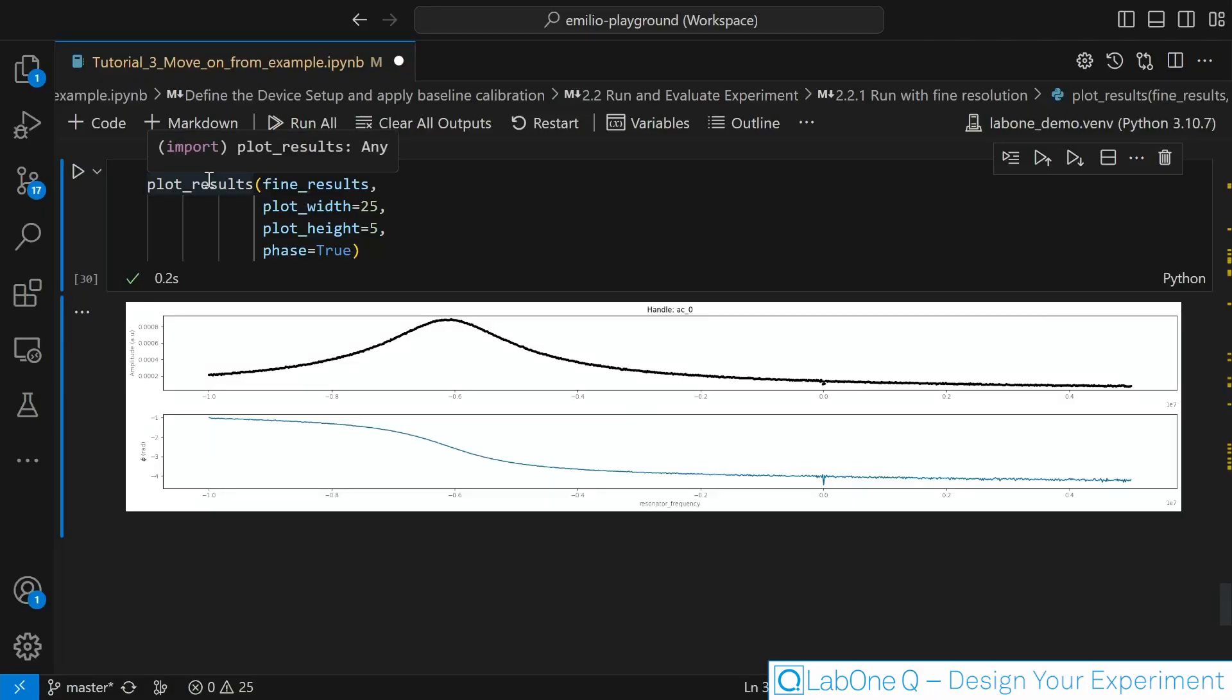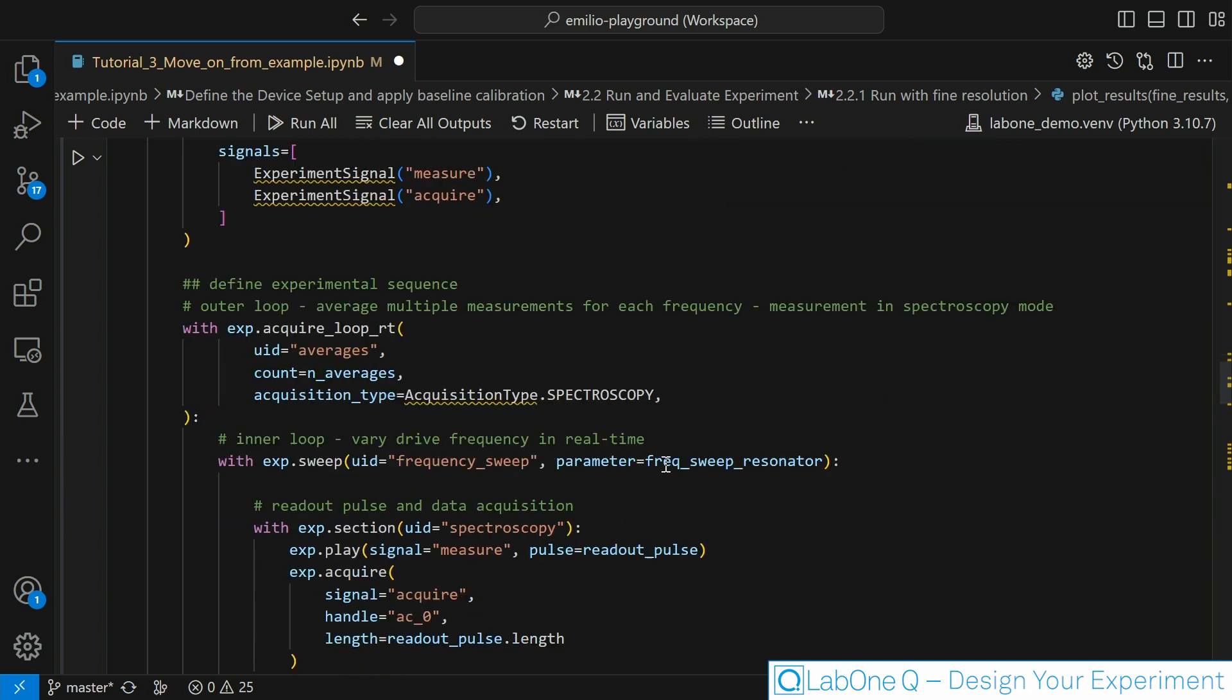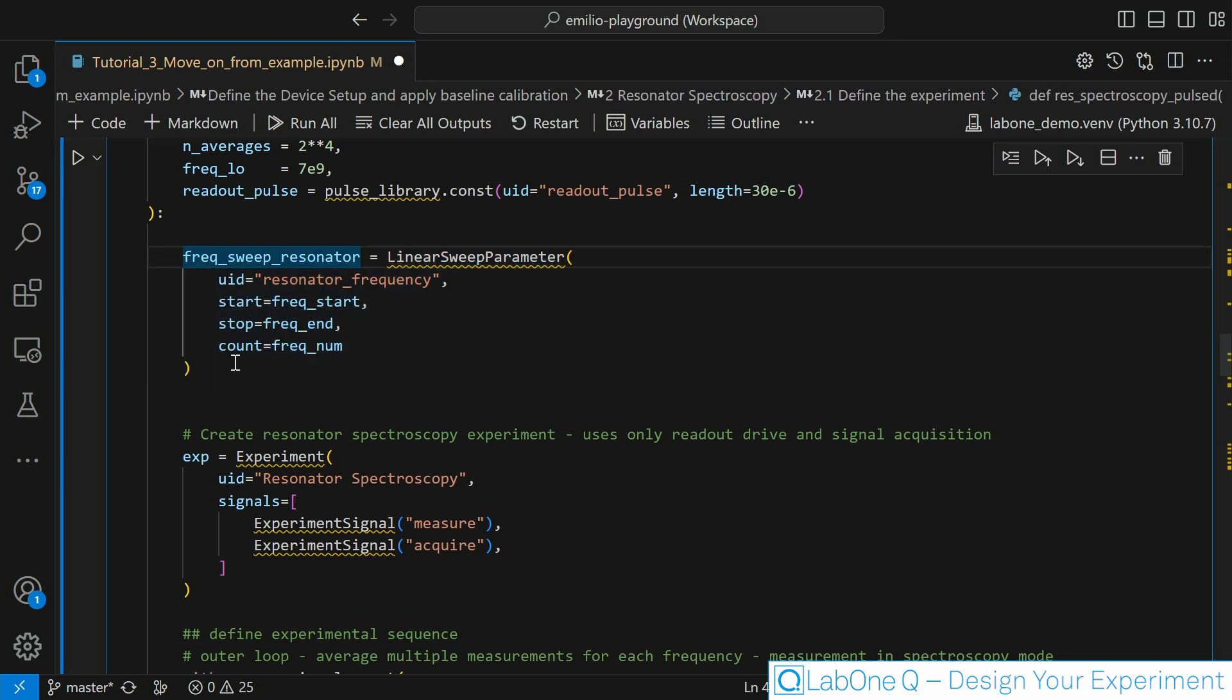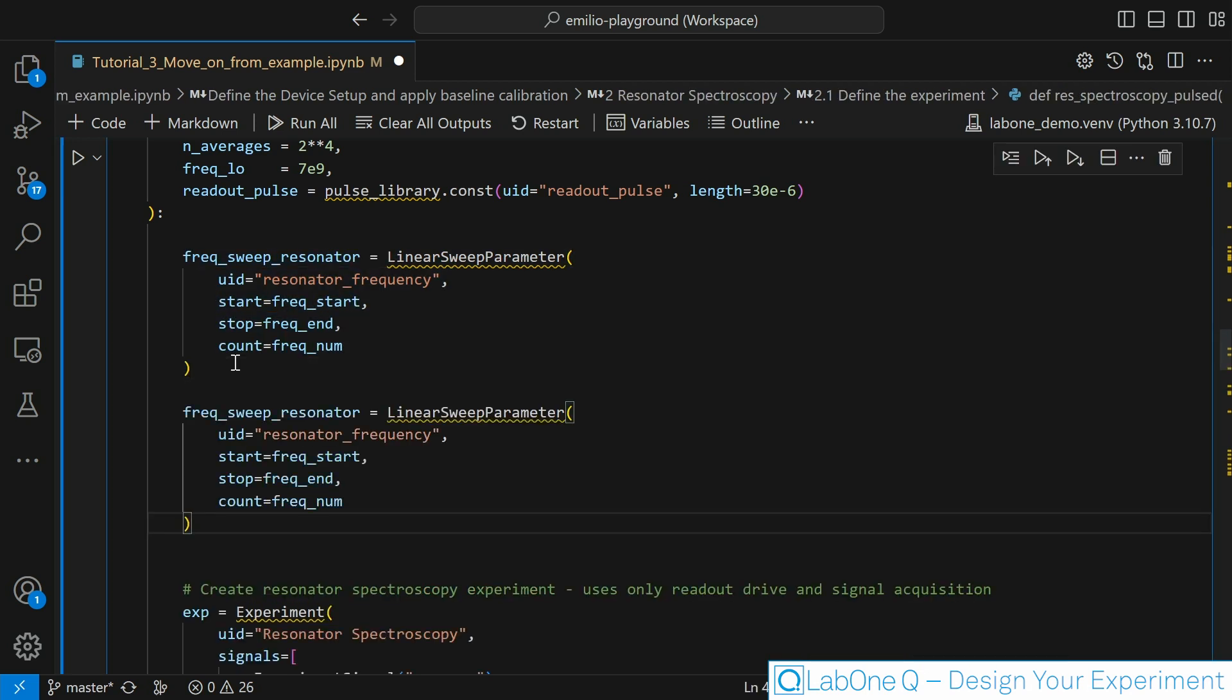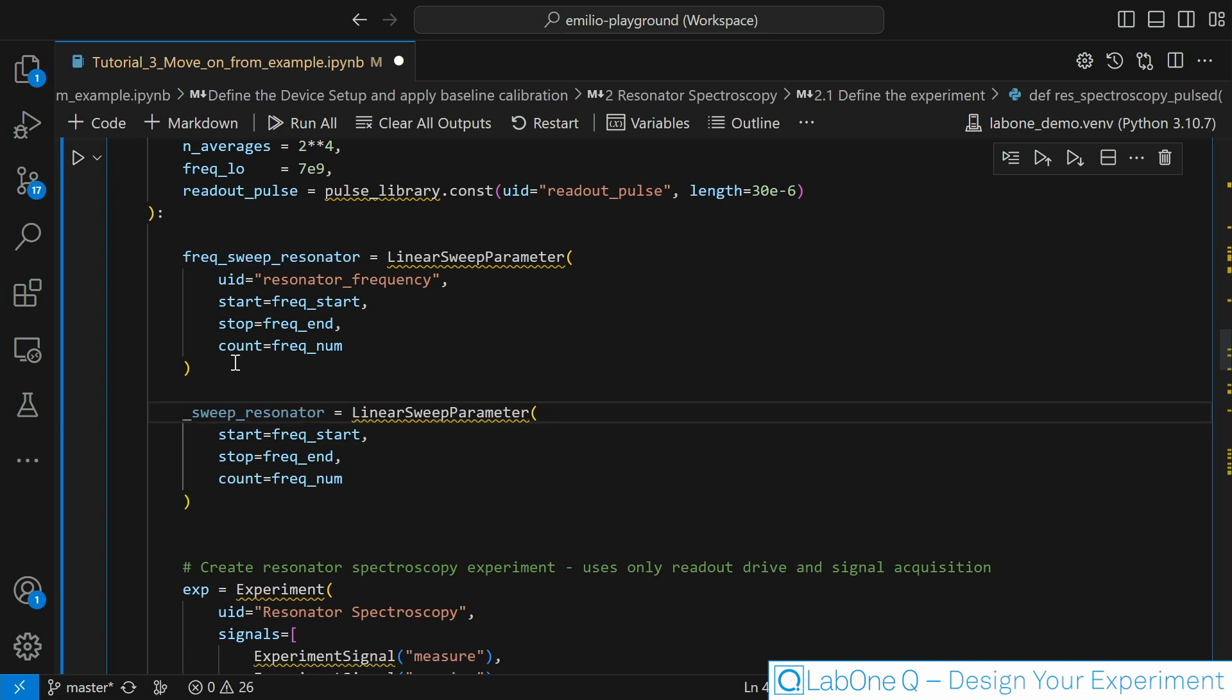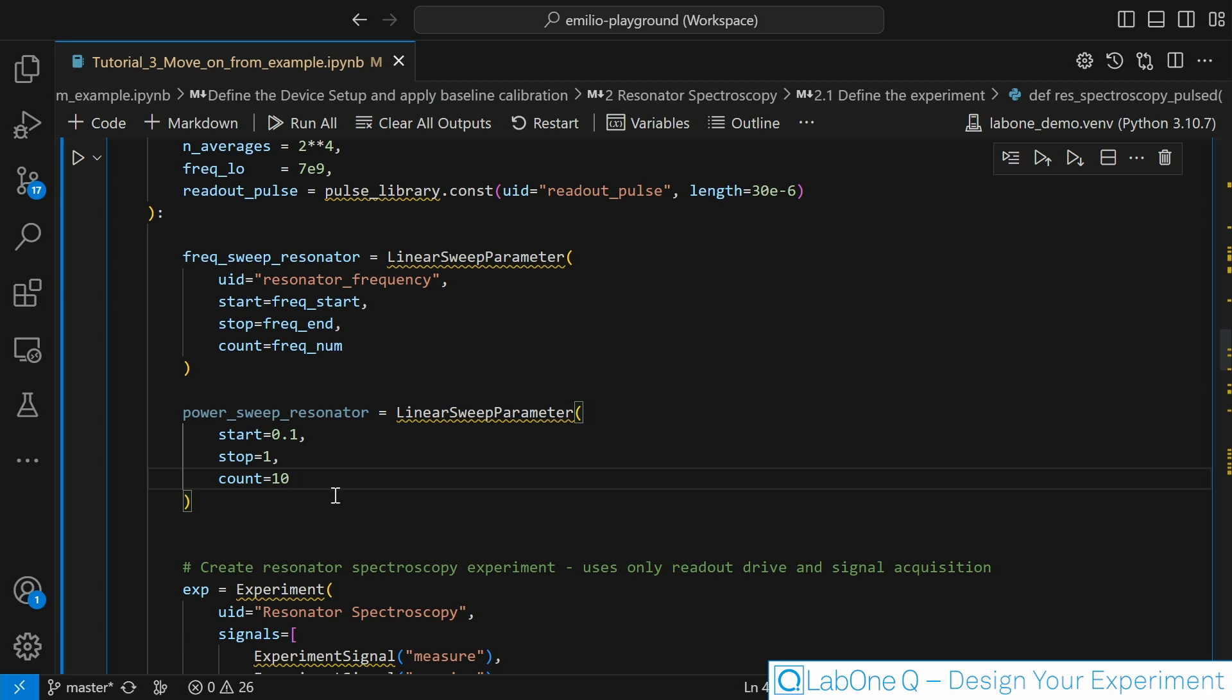Let's try to change these experiments to do a 2D sweep instead. Let's go back to our experiment definition. Now we said that we want to do a power sweep now together with a frequency sweep. So the first thing that we would need is another sweep parameter. Let's call it power sweep resonator in this case. Let's say I want to start from 0.1 as minimum power and arrive up to 1, and I want to test a total of 10 different powers.